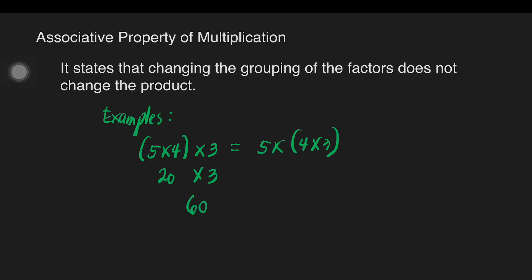How about on the other side of the equation? We'll do the groupings first. We'll copy 5, then we'll multiply 5 to the product of 4 and 3. The answer is 12. So 5 times 12 is equal to 60. If you take a look, you will arrive at the same answer, and that's 60.